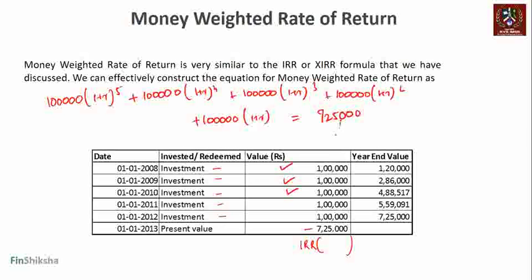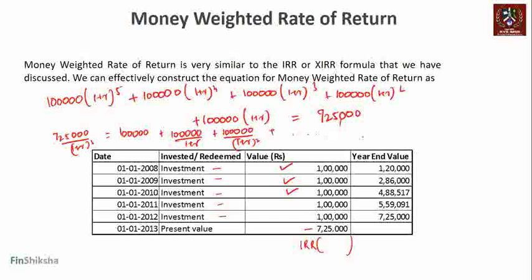One lakh for two years plus one lakh for one year gives us seven lakh twenty-five thousand. We can solve this equation to arrive at the rate. We can write this as 725 divided by (1+r)^5, dividing both sides accordingly: one lakh plus one lakh divided by (1+r), and so on. Taking everything to one side, this effectively becomes the IRR formula — that's what we're calculating: the exact rate of return.